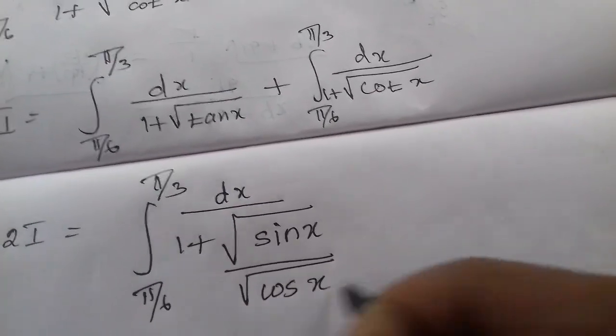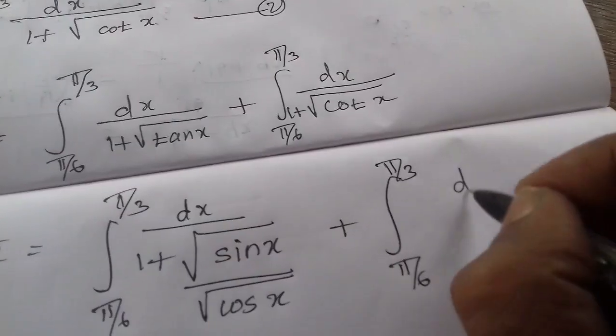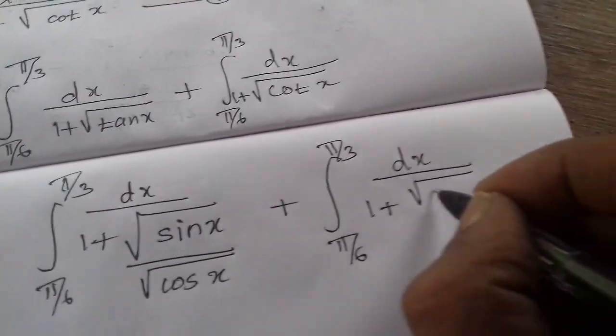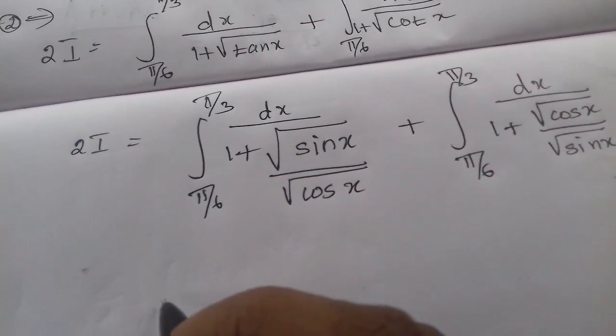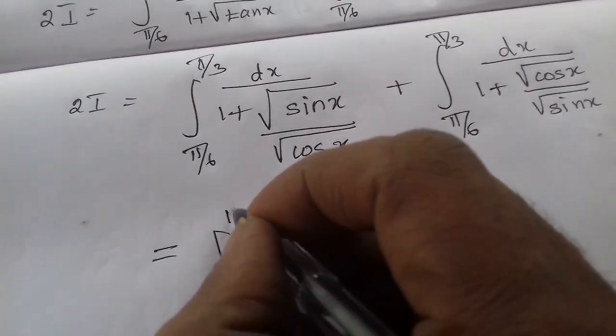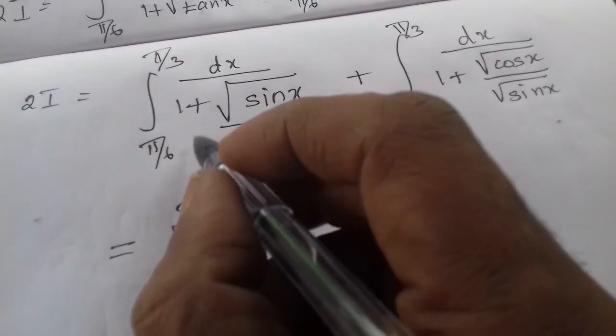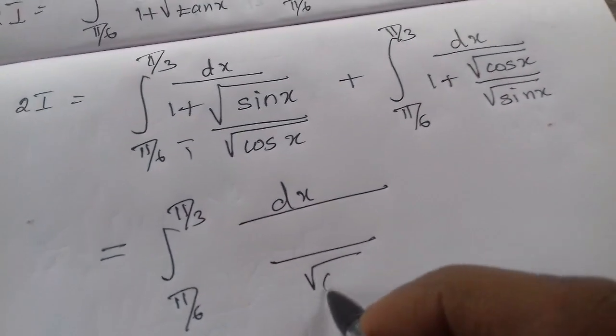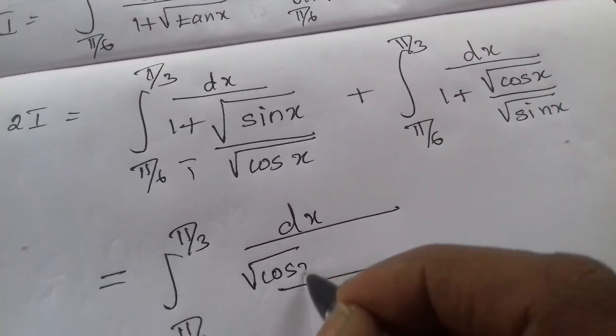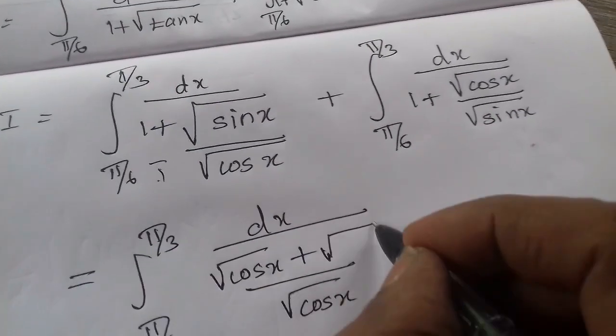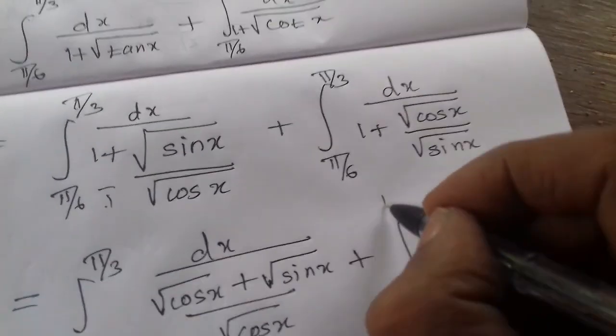So the common - dx divided by 1 plus root of tan x or cos sine x by root cos x divided by root sine x. This side, at the simplification, integral π/6 to π/3, one will be greater than one. Cos x, root cos x, LCM - cross multiplication. Both cos x plus one, root sine x multiply, sine x plus integral π/6 to π/3.